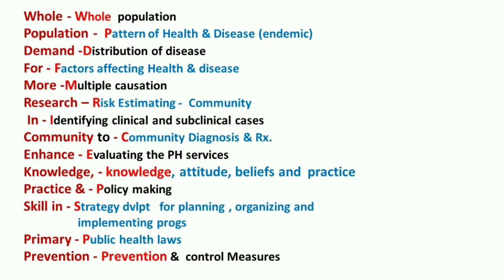R stands for risk estimation in the community — research helps identify and estimate the risk among people regarding various community problems. I stands for identifying clinical and subclinical cases — research helps identify clear-cut symptomatic clinical cases as well as subclinical cases and carriers in the community, thus helping prevent the spread of communicable diseases.